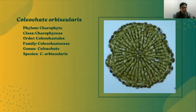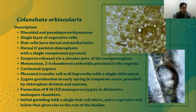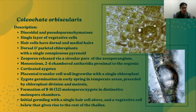Up next we have Coleochaete orbicularis from the family Coleochaetaceae. Coleochaete orbicularis is discoidal and pseudoparenchymatous. Its vegetative tissue is a single layer of cells. Cells are box-like and hair cells have hairs that are dorsal and medial. Chloroplasts are dorsal and parietal except in hair cells, and are typically with a single conspicuous pyrenoid. Zoospores are produced from seemingly undifferentiated cells and are released by a circular pore on the dorsal surface of the zoosporangium. They are monoecious with 2 to 4-chambered antheridia forming proximally to the oogonia. Zygotes, when present, are corticated and have placental transfer cell wall ingrowths with a single chloroplast. Zygote germination occurs in early spring in temperate areas, preceded by chloroplast division and meiosis, resulting in the formation of 8 to 16 meiospores in distinctive meiospore chambers. The initial germling has a single hair cell above and a vegetative cell below that gives rise to the rest of the thallus.